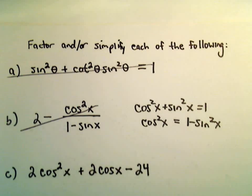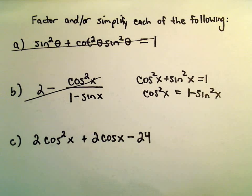Alright, so one more example here of factoring some trig expressions. Here we've got 2cos²x + 2cosx - 24.